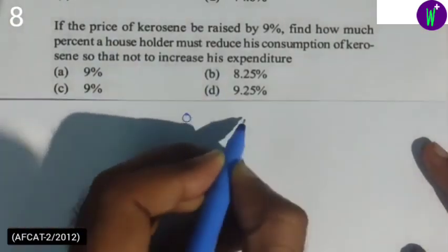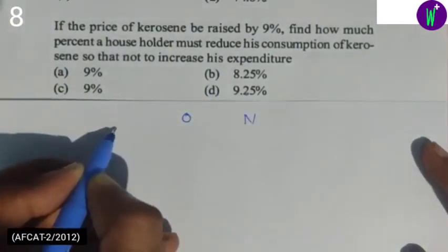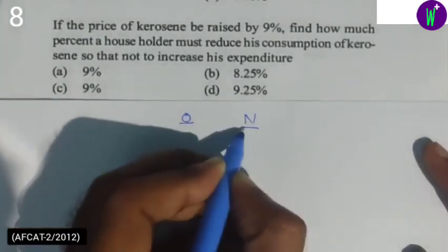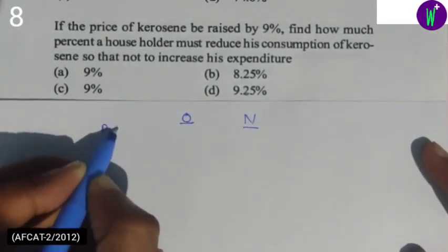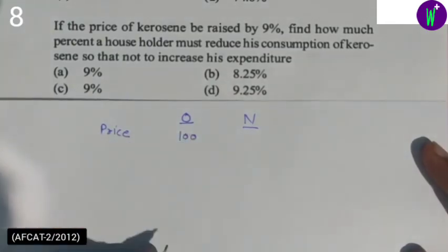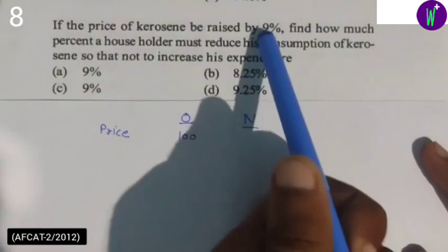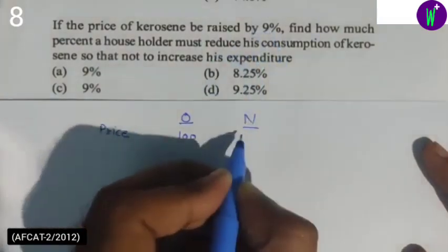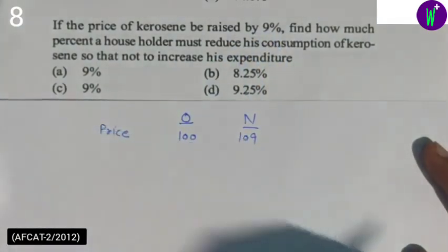Now, what is the original price and what is the new price? The original price, let's say, was 100 units, so with a 9% increase, the new price becomes 100 plus 9%, which is 109.